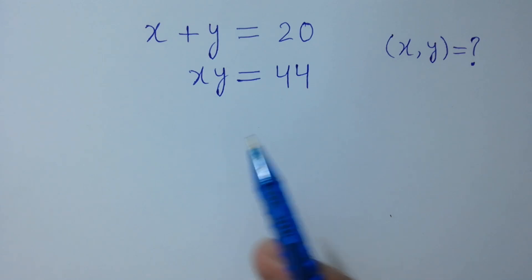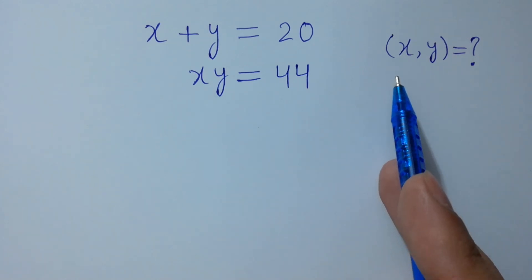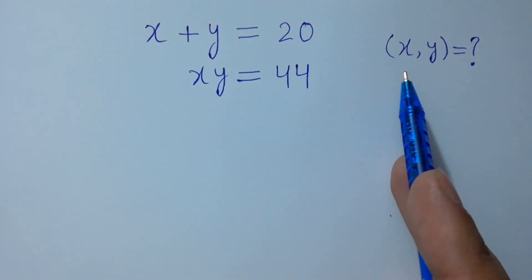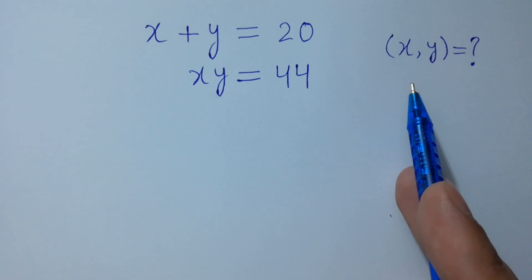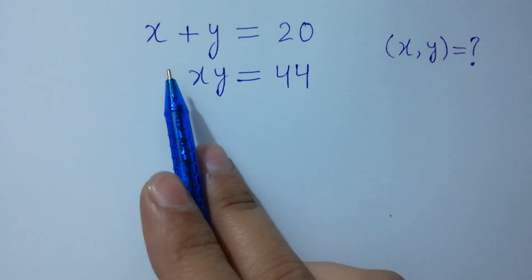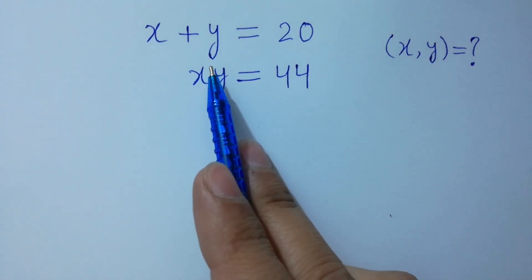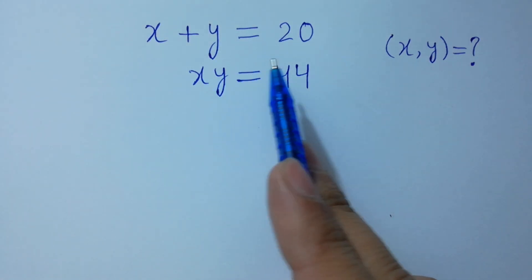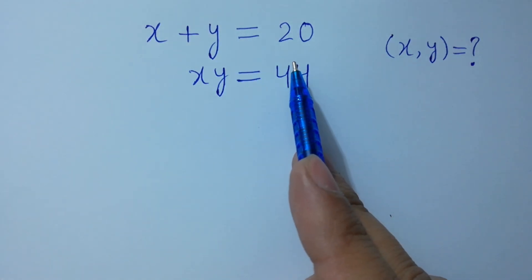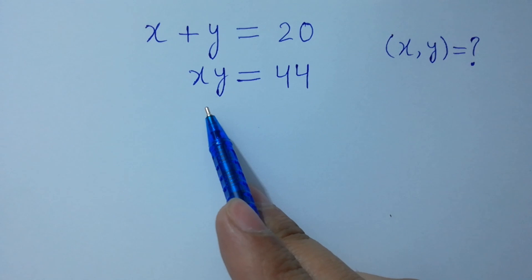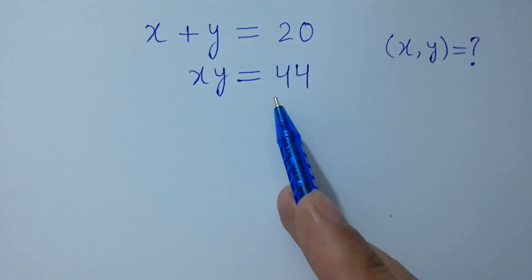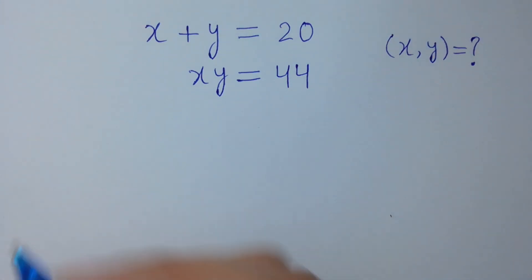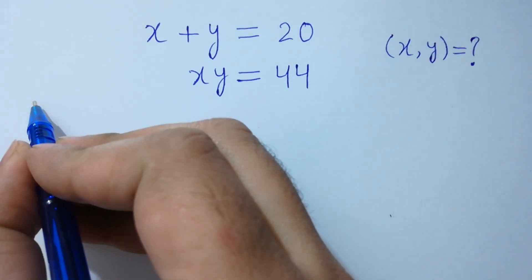Hello friends. Find the value of x and y if x plus y equals 20 and x times y equals 44. Let's have a solution.